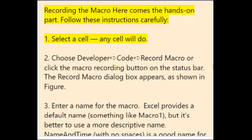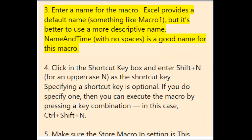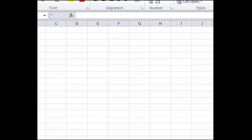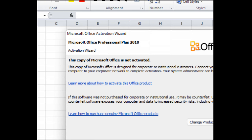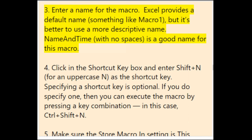Recording the macro — follow these instructions carefully. Step 1: select any cell. Step 2: choose Developer > Code > Record Macro, or click the Macro Recording button on the status bar — the Record Macro dialog box appears. Step 3: enter a name for the macro; 'NameAndTime' (no spaces) is a good name. Step 4: click in the Shortcut Key box and enter Shift+N for an uppercase N as the shortcut key — this makes the shortcut Control+Shift+N.